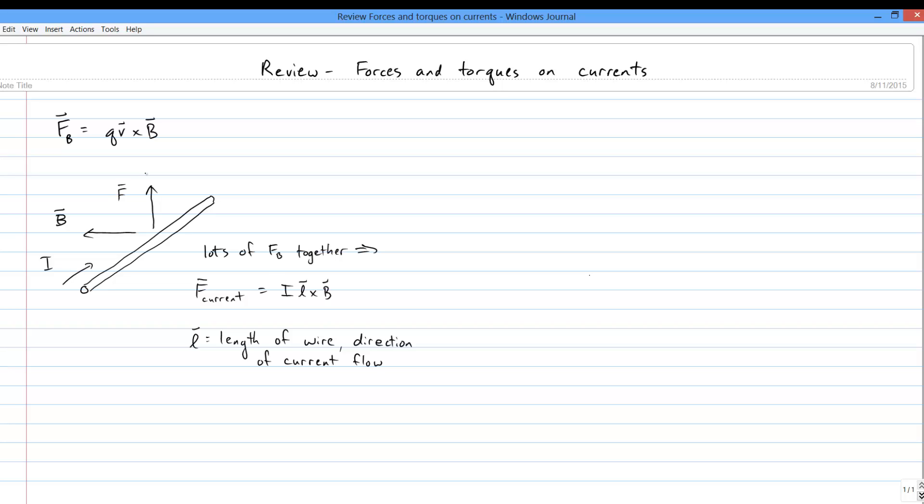And while I won't do the derivation here, the equation we get in the end is that the force on a straight wire with current I and length L is I times L cross B. Note that we're writing L as a vector, and the direction of that vector indicates the direction that current is flowing.